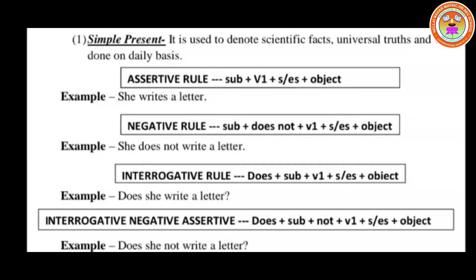For the interrogative negative, the question is asked in negative form: Does + Subject + not + V1 + S or ES + object. Example: 'Does she not write a letter?' These rules must be remembered carefully as they apply to all classifications.